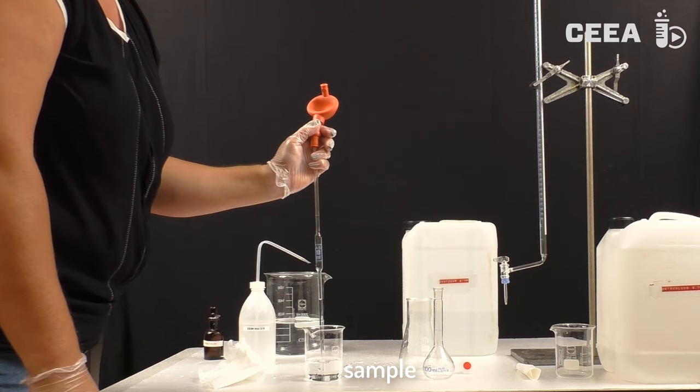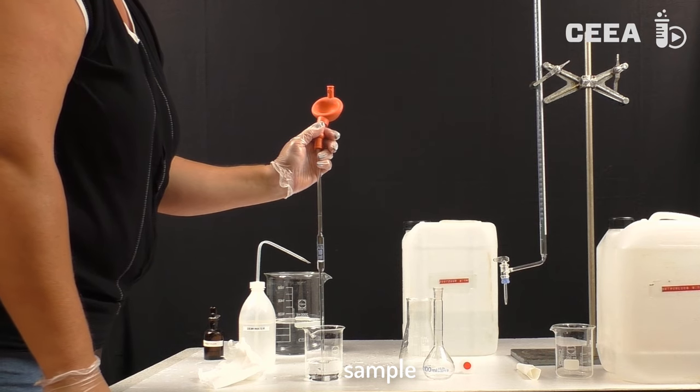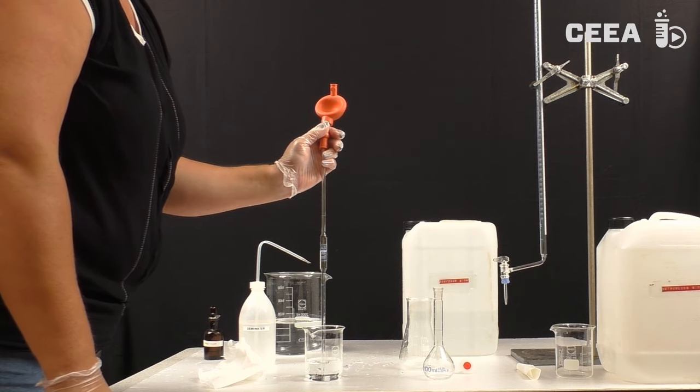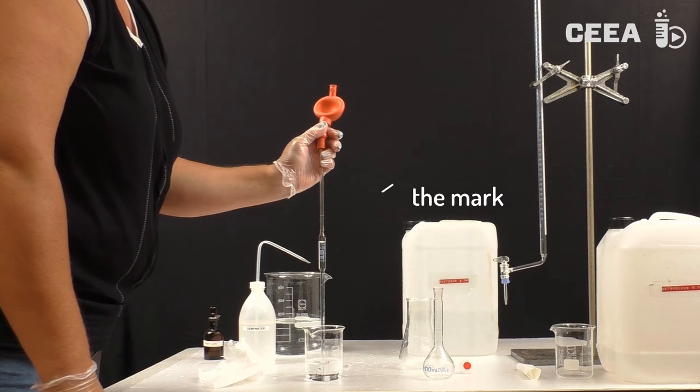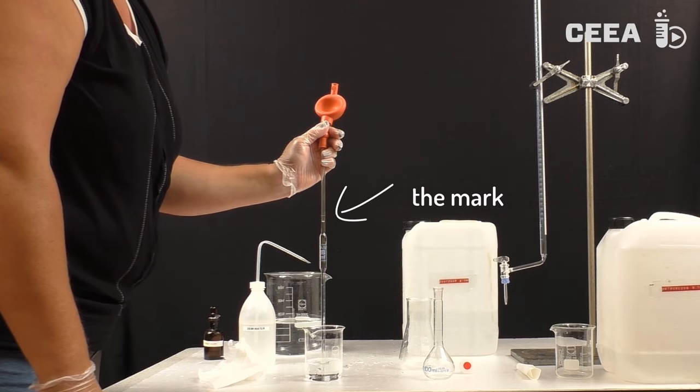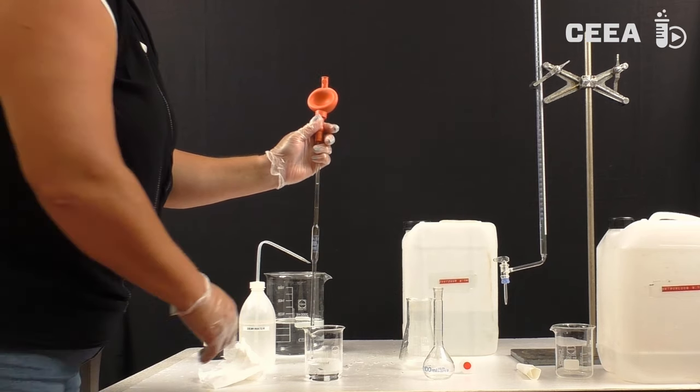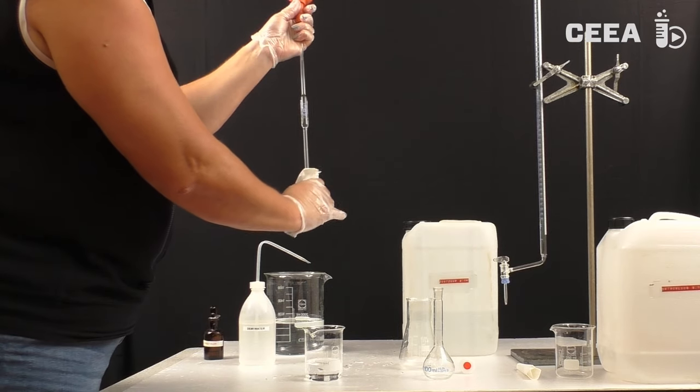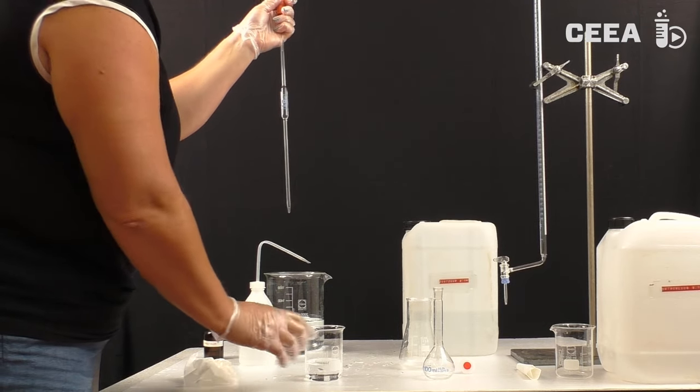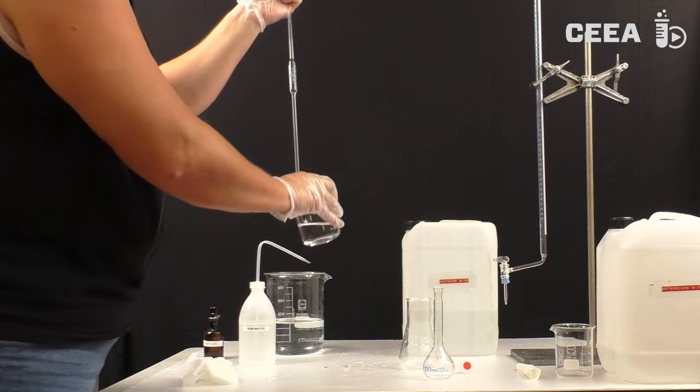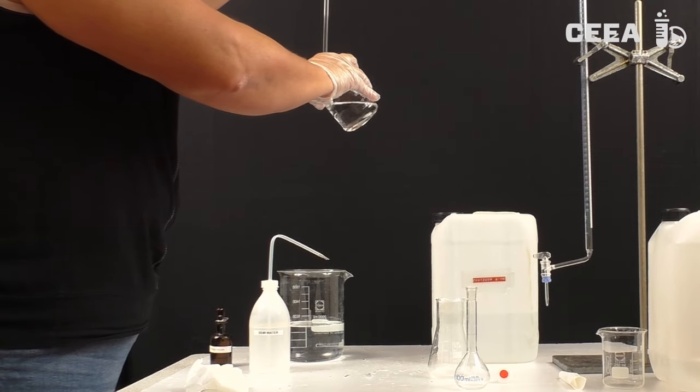Now the pipette has to be filled with sample. We fill the pipette using a balloon to some centimeters above the mark. We dry the outside of the pipette with filter paper, then, in order to get an accurate amount of sample, we let the surplus flow back into the beaker at an angle of 45 degrees.